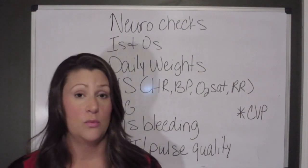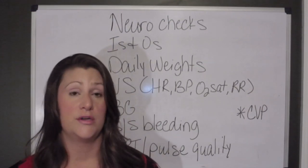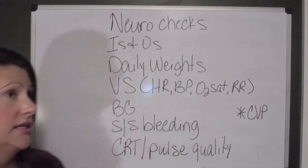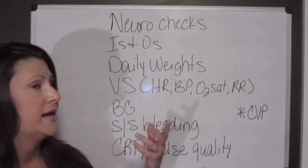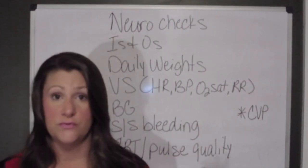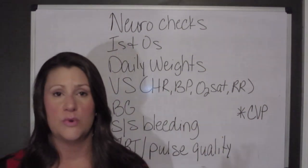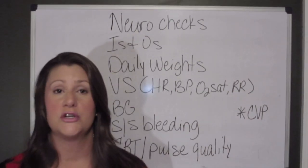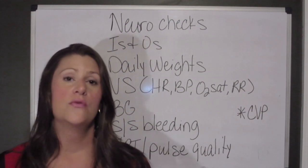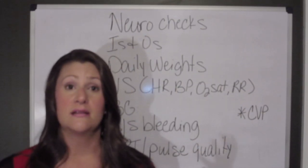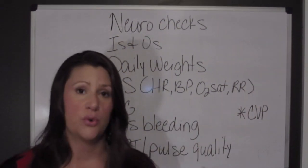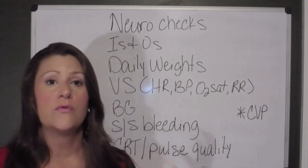Daily weights go right along with that — are we retaining the volume we are giving the patient to replace lost volumes? Vital signs, especially heart rate and blood pressure, should be monitored frequently for hypovolemia and compensation. Oxygen saturation and ABGs are going to be very important with any type of shock because of the potential for anaerobic metabolism and lactic acid production.